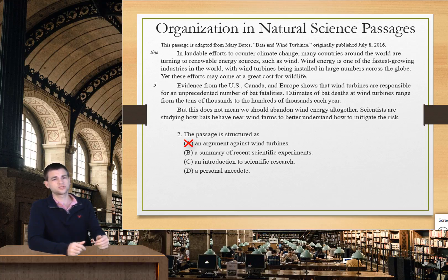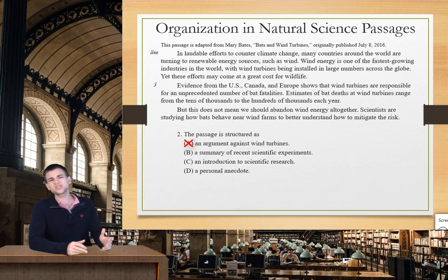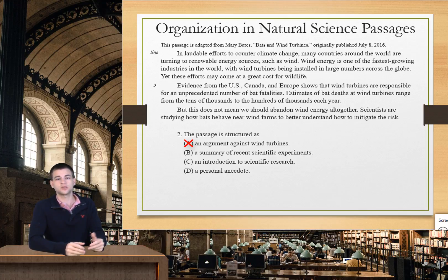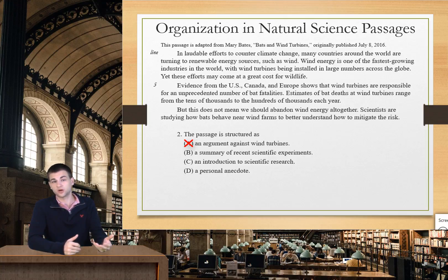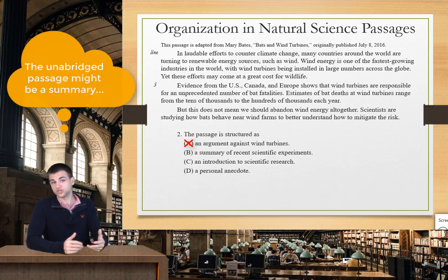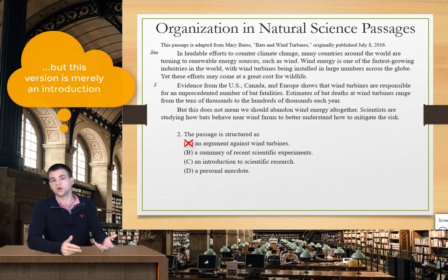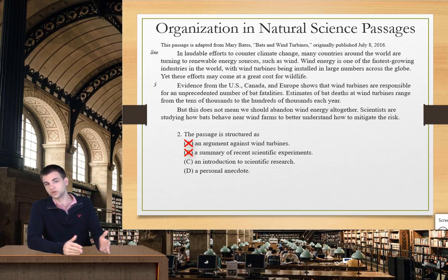B tells us that the passage is a summary of recent scientific experiments. This could also be a kind of tempting choice. However, we haven't really seen any of these experiments yet. The author has just introduced the topic at this point, and she hasn't actually explained any of the experiments. Later on, we assume she's going to introduce those experiments, but at this point in the passage, she hasn't mentioned scientific research at all. So B is not a good choice.